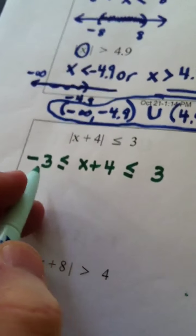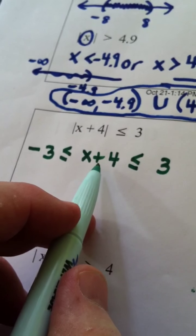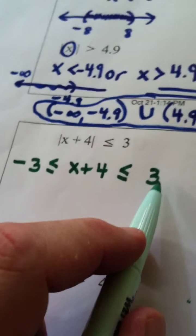So the first thing we do is we learn our pattern. If distance is less than or equal to a positive number, then the quantity is sandwiched in between negative and positive, in this case 3.